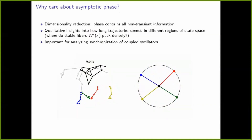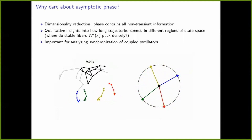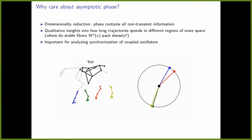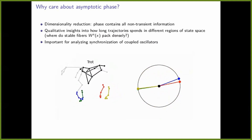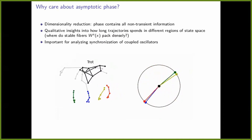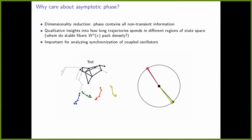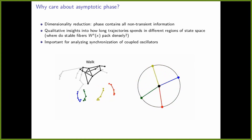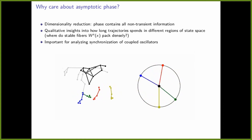Asymptotic phase is cool mathematically, but why might you care for applications? As a dimensionality reduction tool, the asymptotic phase contains all non-transient information — it tells you exactly where on the reduced order model you end up. By thinking about the derivative of the phase map, you can also get insights into how long trajectories spend in different regions of state space. Something really important: it's useful for analyzing synchronization of coupled oscillators.